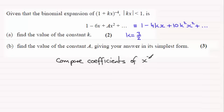And if we do that, then we've got that therefore A will be equal to 10k squared. We know that k is 3 over 2 from part A, so we've got 10 times 3 over 2 squared, and that gives us 45 over 2. And there's your value then of A.